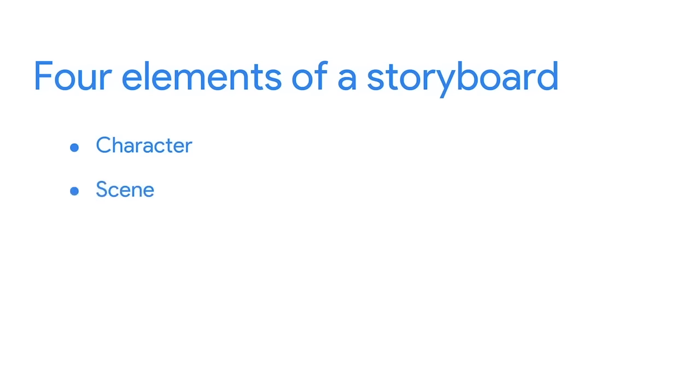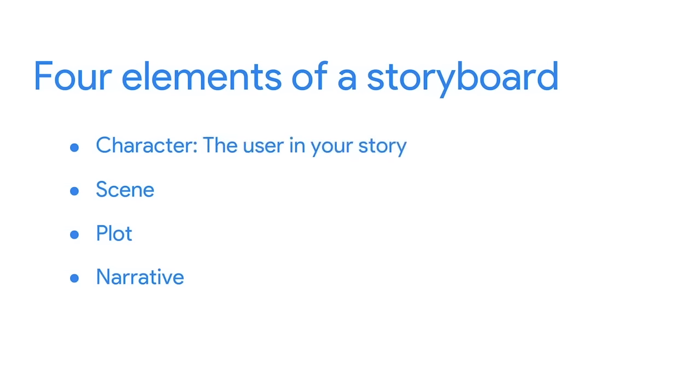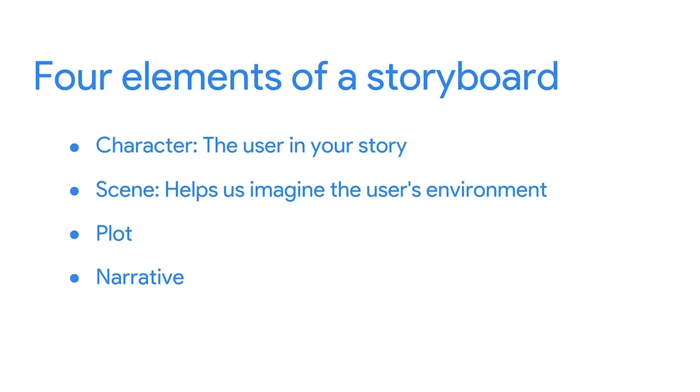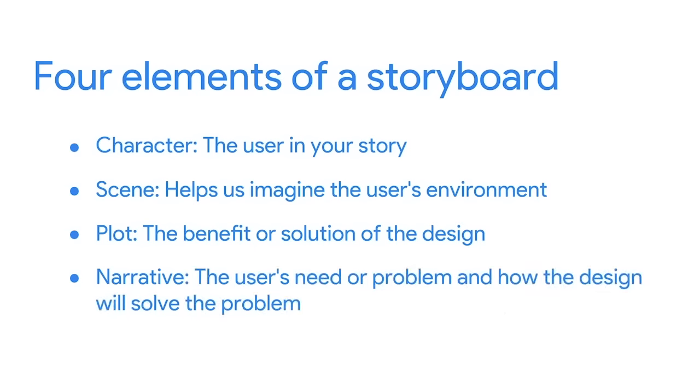A real product might have many screens, but your storyboard should focus on just the most important parts of a user's experience. The four key elements of a storyboard are the character, the scene, the plot, and the narrative. The character is the user in your story. The scene helps us imagine the user's environment. The plot describes the benefit or solution of the design. The narrative describes the user's need or problem and how the design will solve it.